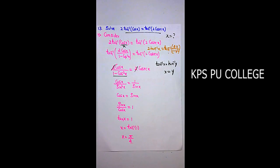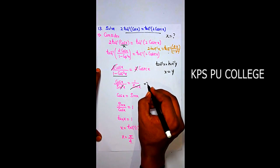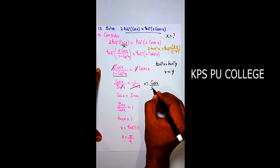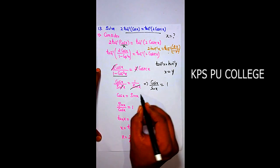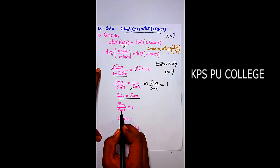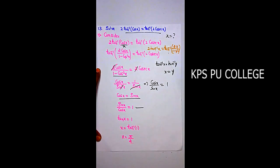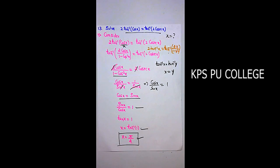So cosx/sin²x = 1/sinx, meaning cosx/sinx = 1, so tanx = 1, giving x = tan⁻¹(1) = π/4. The required value of x is π/4.